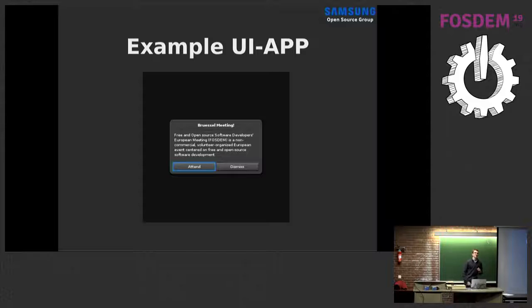You have two buttons below that - one is the attend button and one is the dismiss button. What you can see here is that the attend button has a blue rectangle around it, which indicates that this button has focus.